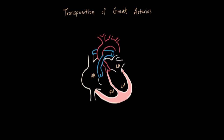So in transposition, remember these two vessels are plugged into the opposite place where they're supposed to be. The pulmonary artery leading to the lungs now plugs over into the left ventricle.